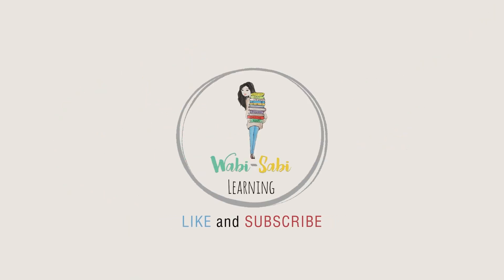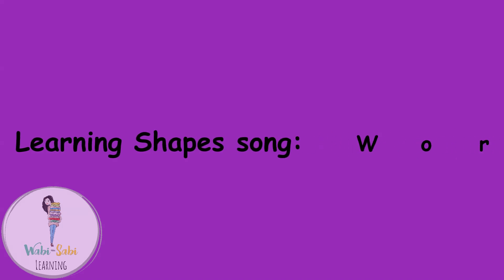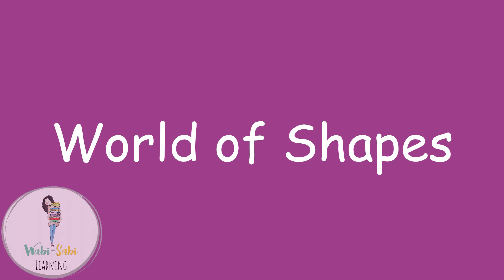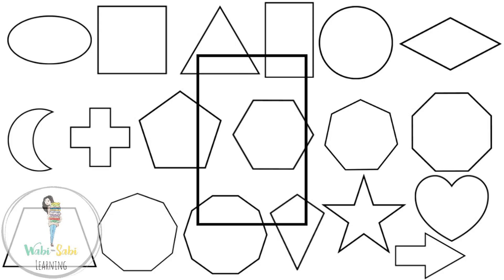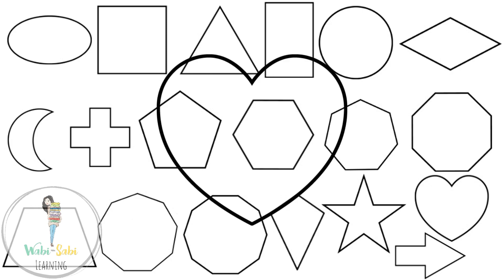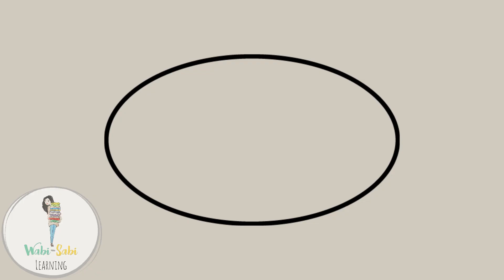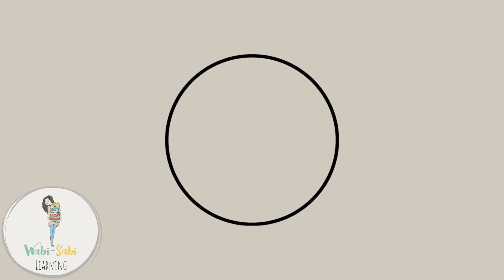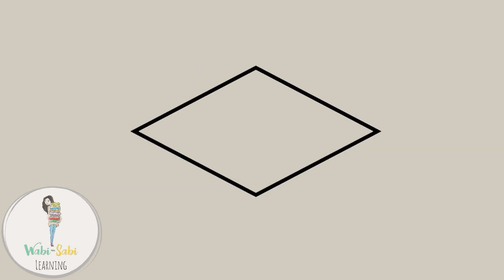Wabi Sabi Learning. There's so many different shapes beyond all the basic ones: ovals, squares and triangles, rectangles and circles too. There is also rhombus,